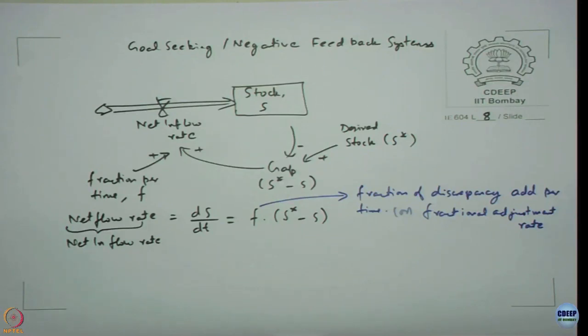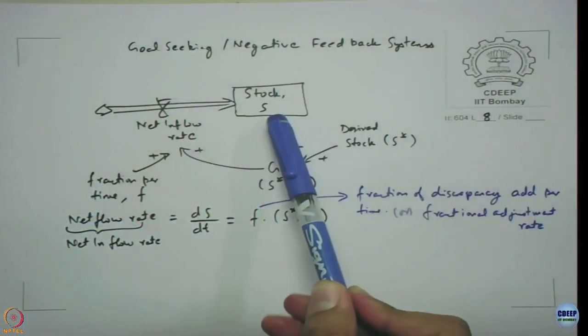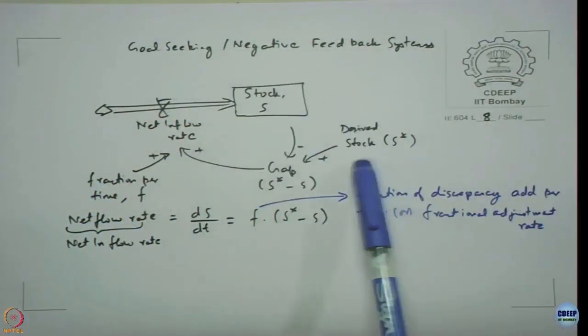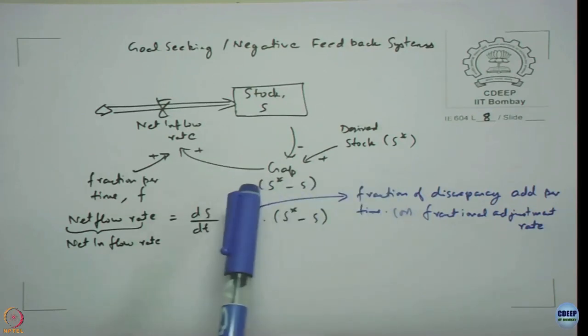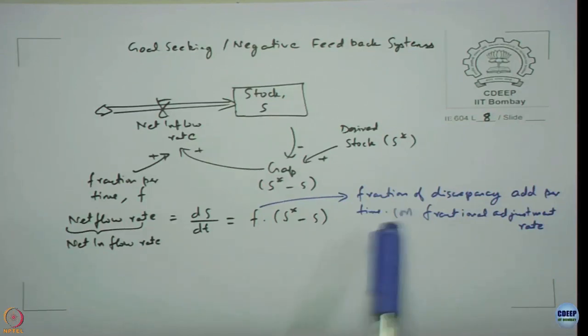In most of the time, it is not possible to completely eliminate the gap at one time step itself. It takes some time for the room to cool down. Every time, some small amount of the difference is added. If you think of stock as current room temperature and the desired cooling that we want, some small amount of gap is satisfied every time unit. That is what we are modeling here, and the rate at which it is going to happen is defined by that fraction f.